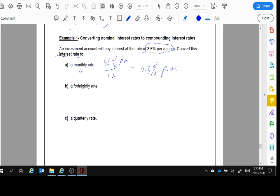Part B, a fortnightly rate. Again, still for 3.6% per annum. There are 26 fortnights in a year. When we do this, we end up getting 0.138% per fortnight.